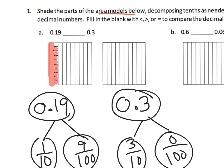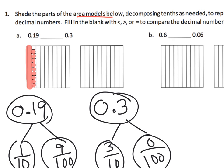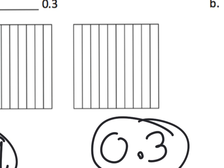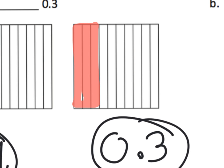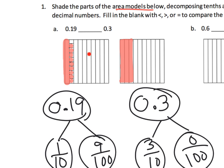Now we need to model 0.3, which is three tenths and no extra hundredths. I'm going to zoom in and shade in three tenths — one, two, and three. There is our shading for three tenths. That immediately makes it easy to compare: this only has one tenth while this has three tenths.